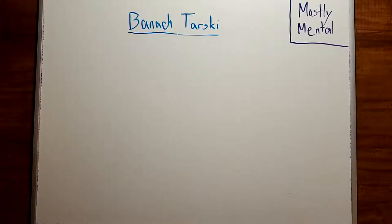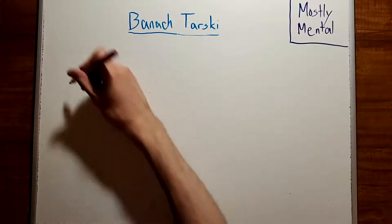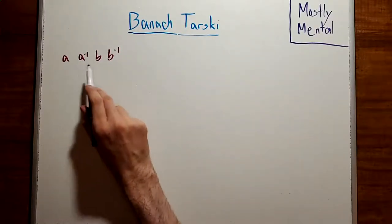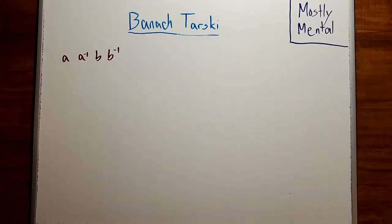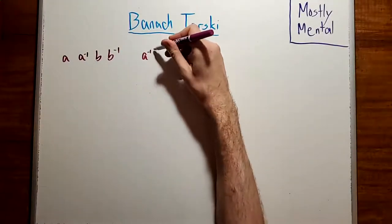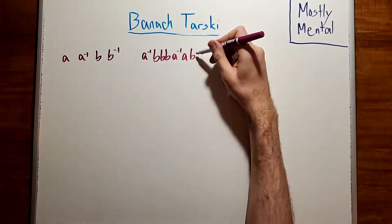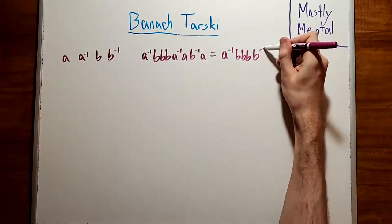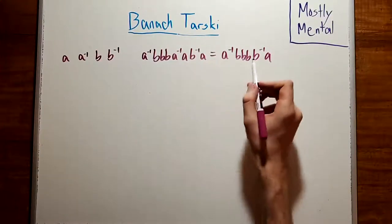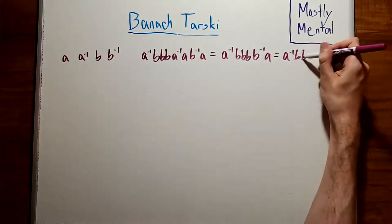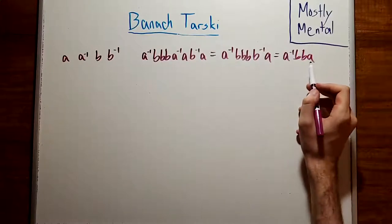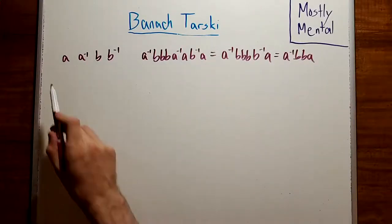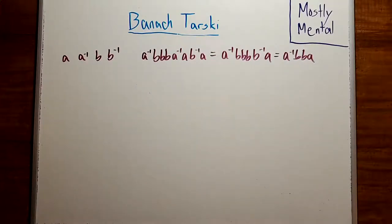To fill in the details, we'll need to take a detour through abstract algebra. Suppose we have four letters: A, A inverse, B, and B inverse. And we have the rule that any time A and A inverse, or B and B inverse, are next to each other in a word, they cancel out. So, for example, the word A inverse, BBB, A inverse, A, B inverse, A, will be equivalent to A inverse, BBB, B inverse, A, since the A inverse and A cancel. And then we can cancel again with this B and B inverse, to get A inverse, BBB, A. And we can't cancel this any further, even though there's an A inverse and an A, because there are some letters in between. Then the group of words that we can make with these letters and this cancellation rule is known as the free group on A and B.